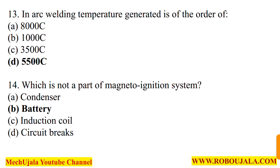In question number 14, they are asking: which is NOT a part of the magneto ignition system? Option A is condenser — condenser does work in the magneto ignition system, so it is not the answer. Option C is induction coil — induction coil is part of magneto ignition, so not correct. Option D is circuit breaker — also part of magneto ignition. However, a battery is not part of the magneto ignition system. So option number B, battery, is the correct option.